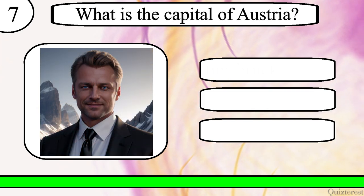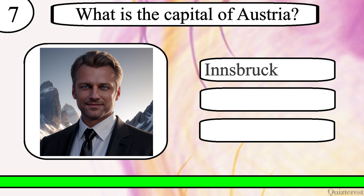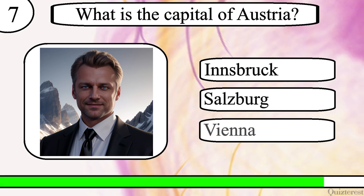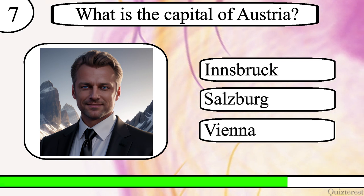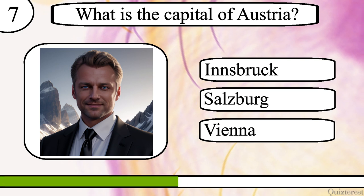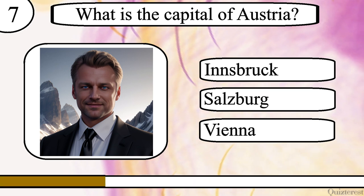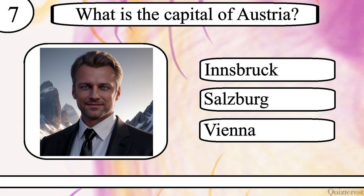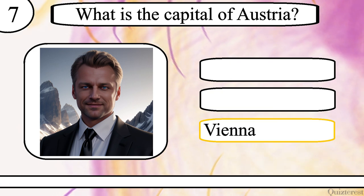Question 7. What is the capital of Austria? Innsbruck, Salzburg, or Vienna? The correct answer is Vienna.